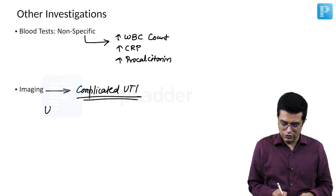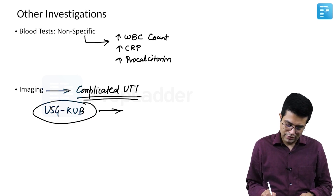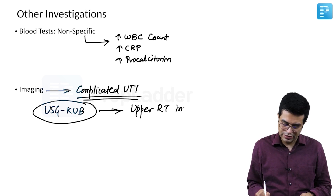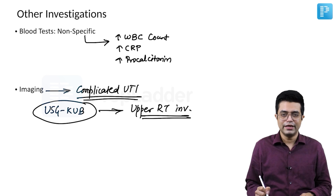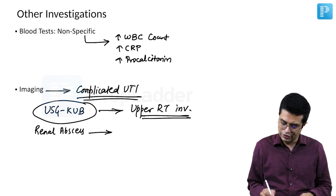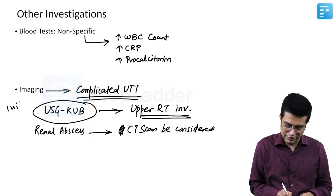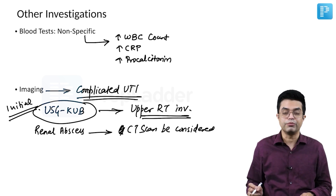You can perform an ultrasound KUB, which will show upper renal tract involvement such as acute pyelonephritis. In certain patients where you suspect a renal abscess or perinephric collection, a CT scan can also be considered. However, the initial imaging will always be ultrasound KUB.